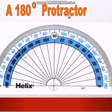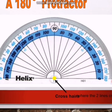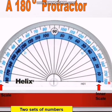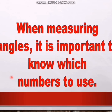Let me explain this using a 180-degree protractor. It has a straight baseline at the bottom, a crosshairs point where two lines cross, and two sets of numbers: the outer scale and the inner scale. When measuring angles, it is important to know which scale to use — the inner scale or the outer scale.